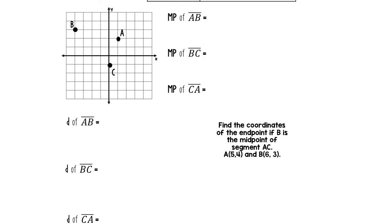First and foremost, we're going to find the midpoint of line AB. But first, let's label all these points and list their coordinates. A is one to the right and two up, so A is at point (1, 2). B is four to the left and three up, so B is at (-4, 3). C is on the Y axis — none left or right — and one down, so C is at (0, -1).